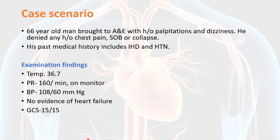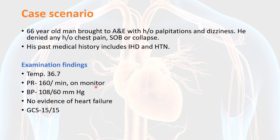Here we have a 66-year-old man brought to the emergency department with history of palpitations and dizziness. There was no history of chest pain, shortness of breath, or collapse. His past medical history included ischemic heart disease and hypertension. The striking feature on examination is a heart rate of 160 beats per minute, blood pressure on the lower side, and no evidence of heart failure.